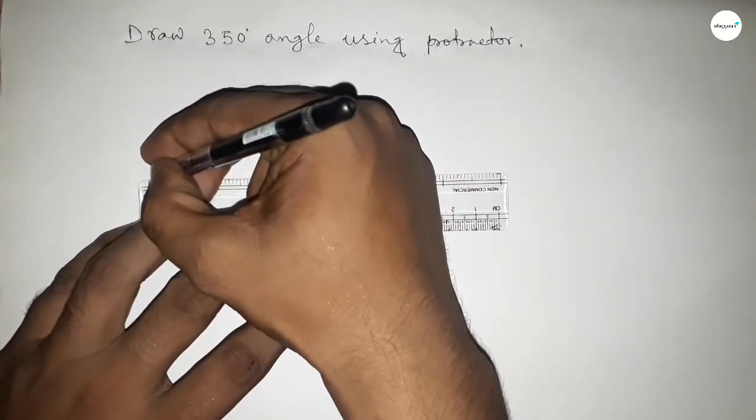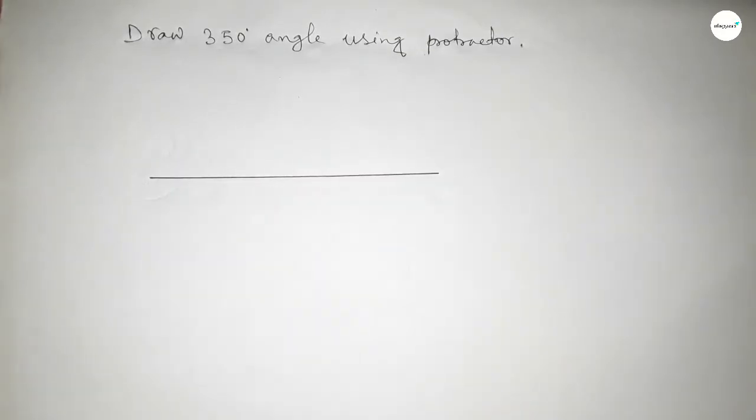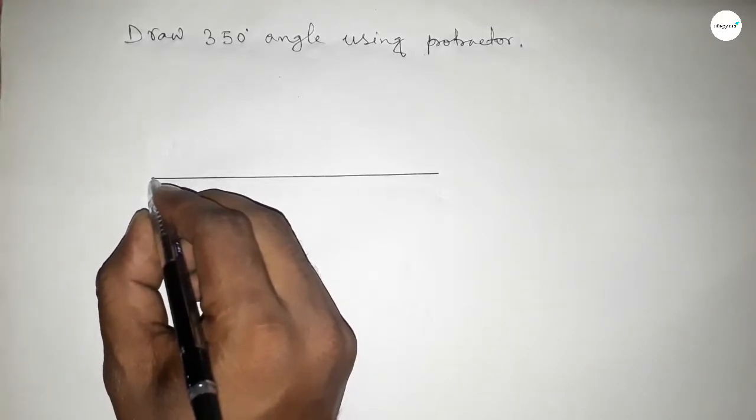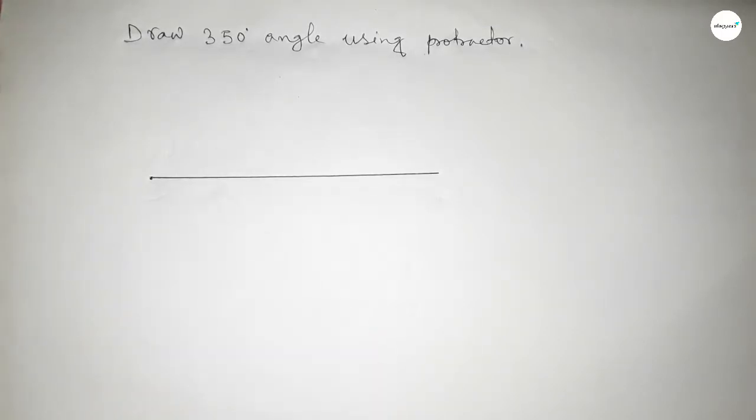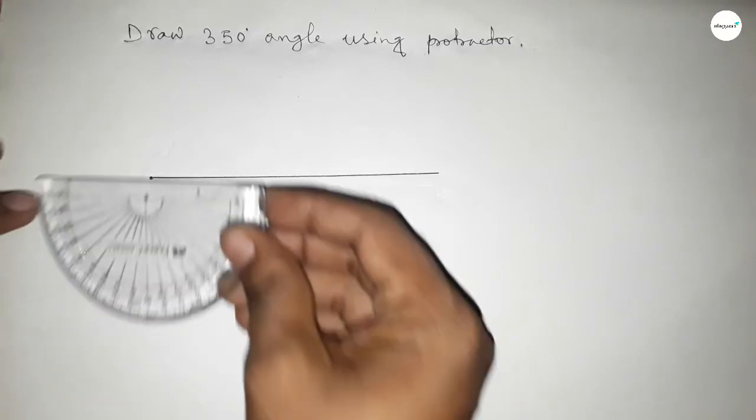Next, pointing out here to draw a 350 degree angle on this point. Now putting the protractor on the line perfectly.